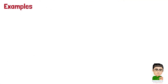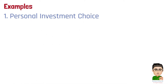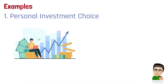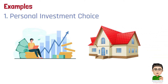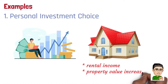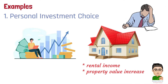Here are two examples to help you better understand the term. Number 1: Personal investment choice. Imagine you have some money and can either invest it in the stock market or buy a property. If you choose to invest in stocks, the opportunity cost is the rental income and property value increase you could have gotten from the property. To figure out this cost, you'd need to estimate how much return you could have made from the property, including rent and value appreciation.